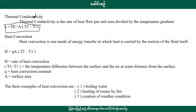HC is equal to QA times (T2 minus T1). H is equal to the heat compression constant. T2 minus T1 is the temperature difference between the surface and the air at some distance from the surface. Q is the heat compression constant and A is equal to the surface area.